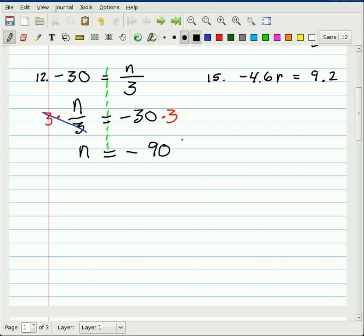Over here, we have -4.6r = 9.2. The inverse operation for -4.6 times r is to divide by -4.6. But if you do it to that side, you also have to do it to the other side.